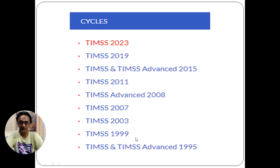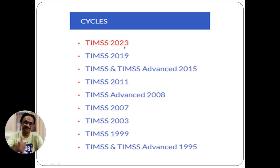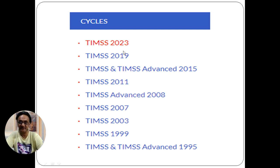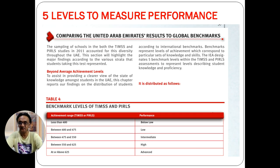The TIMSS cycles have been: 1995, 1999, 2003, 2007, 2011, 2015, 2019, and 2023 — that is eight cycles so far. The latest published result is 2019, as the 2023 results are still pending. They may be published in 2025, so the latest available data remains 2019.